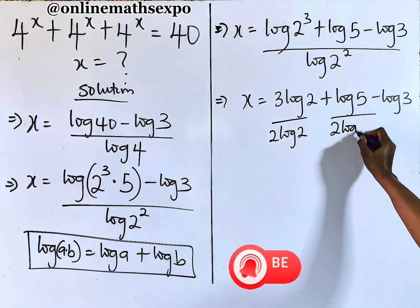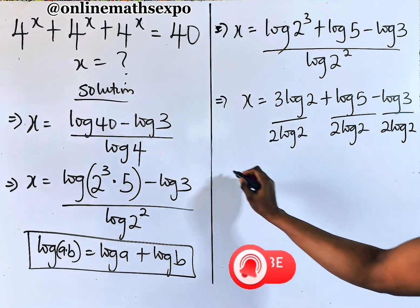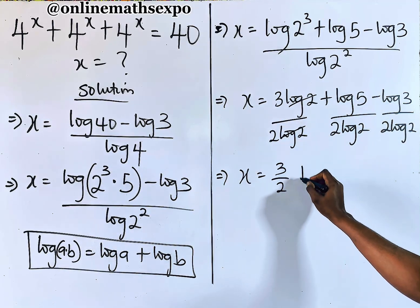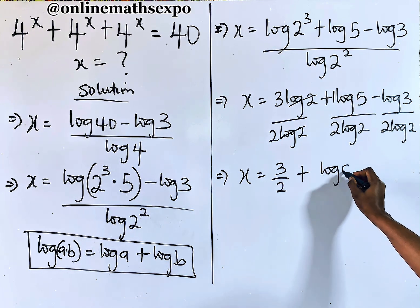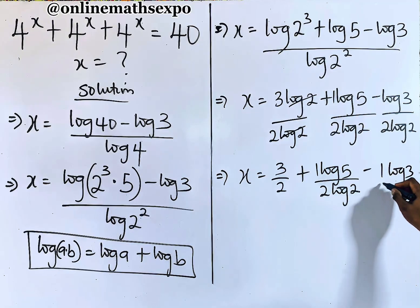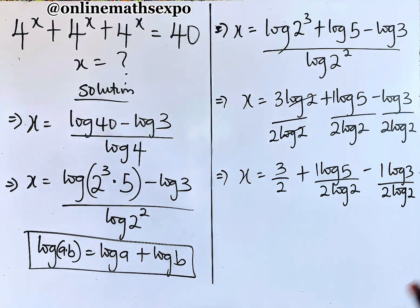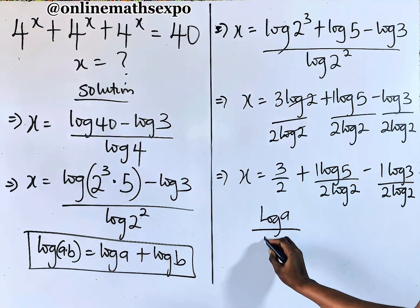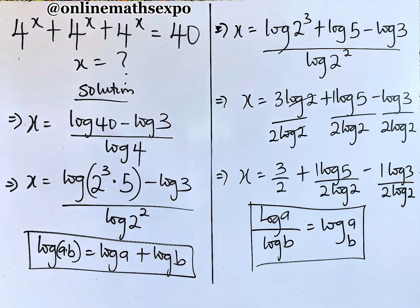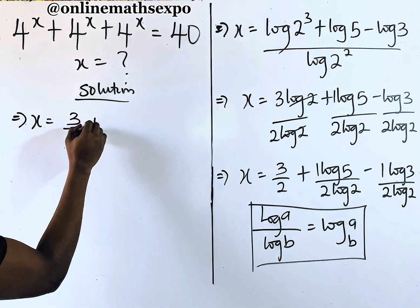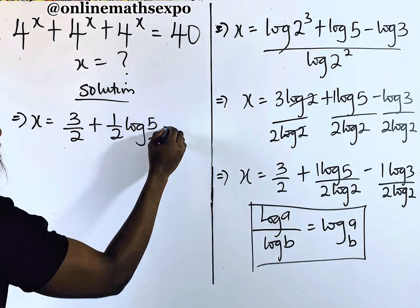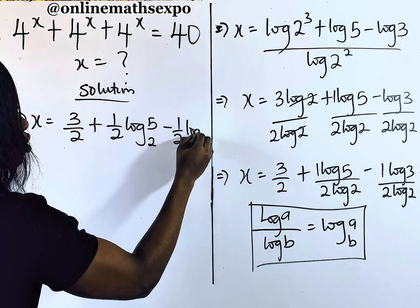We can divide each numerator term by 2 log 2. So the power multiplies: 3 log 2 divided by 2 log 2 gives us 3 over 2, since log 2 cancels. Then we have log of 5 divided by 2 log 2, minus log of 3 divided by 2 log 2. Now remember, for every log of a divided by log of b, it's always log of a base b — your change of base rule. So applying it here, we have x is equal to 3 over 2 plus one-half log 5 base 2, minus one-half log 3 base 2.